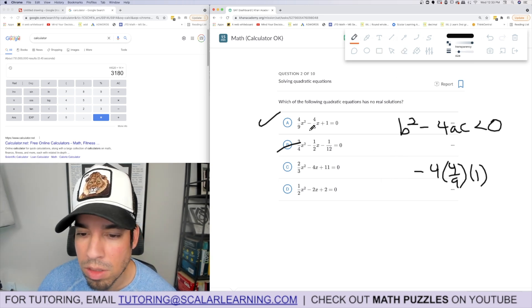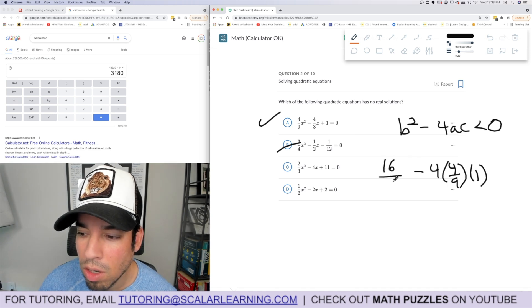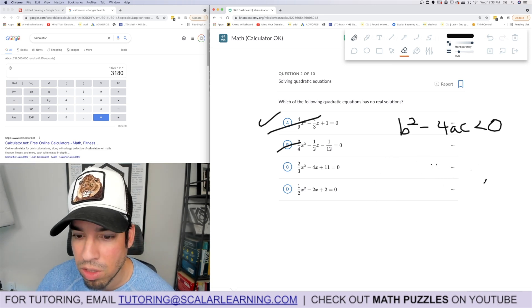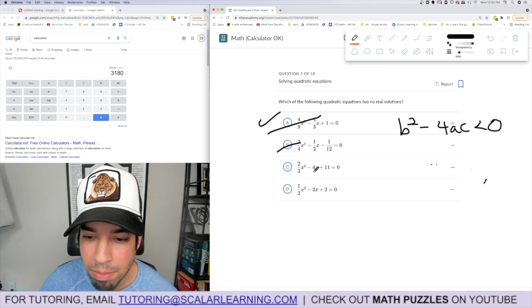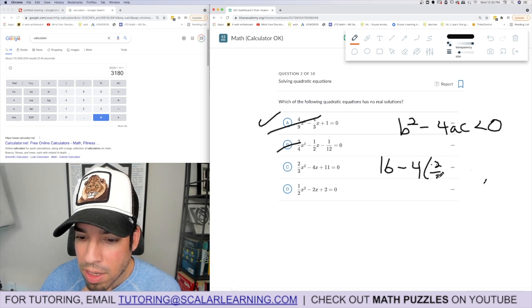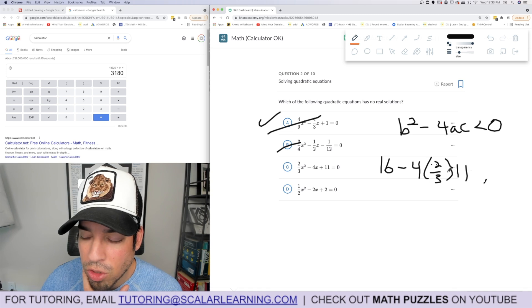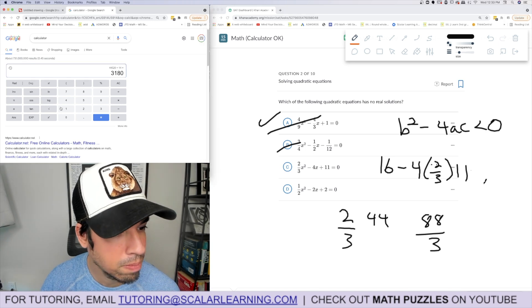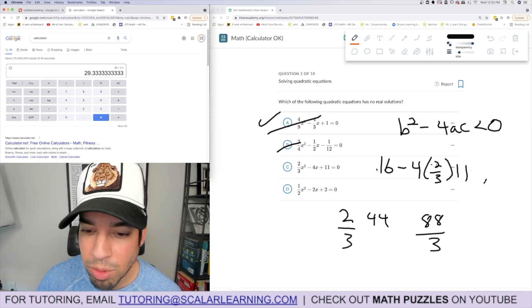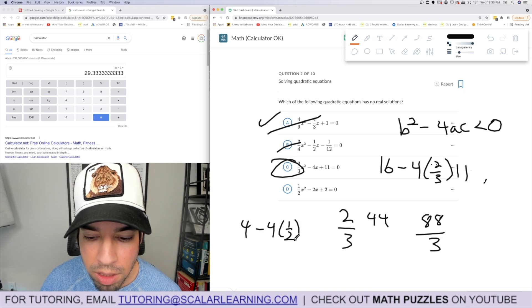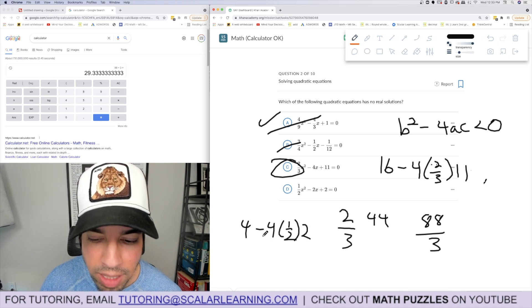Let me check: b squared is 16 over 9. This gives me exactly zero, that's out. For option c, b squared is 16 minus 4ac. That's 4 times 4 times two-thirds, which is 44 times two-thirds, which is 88 over 3. That's 29.3, so this will give me a negative. C is the winner.